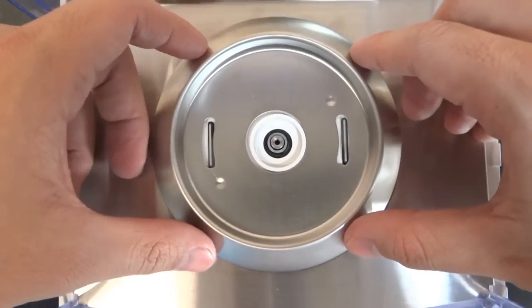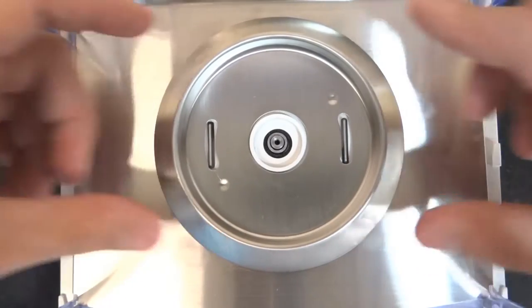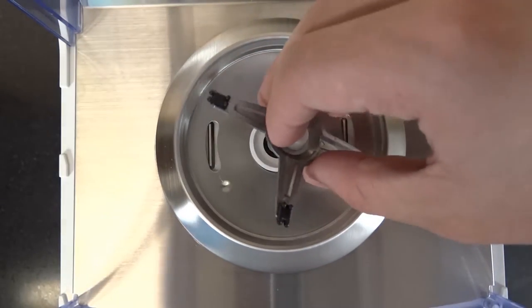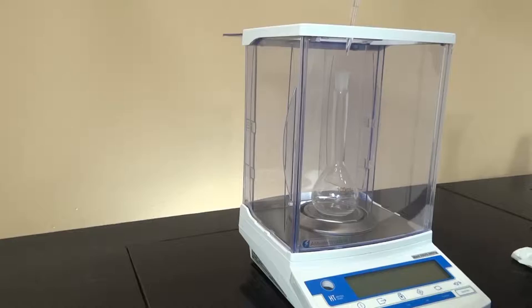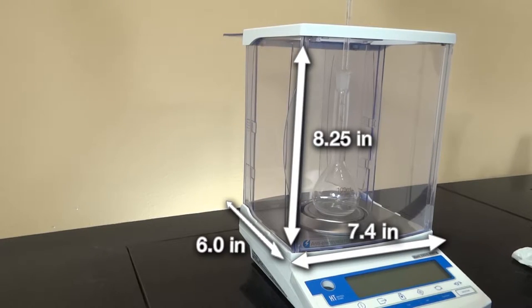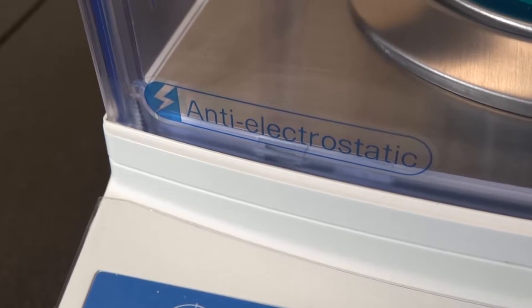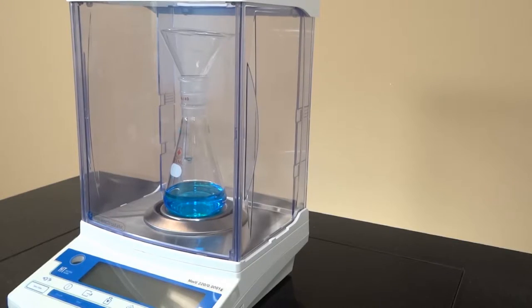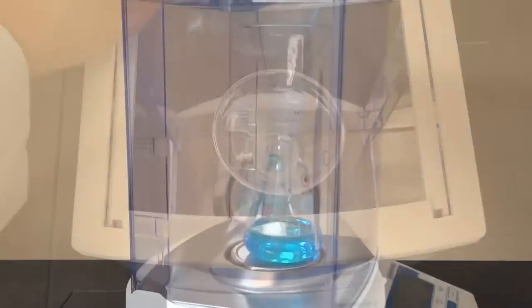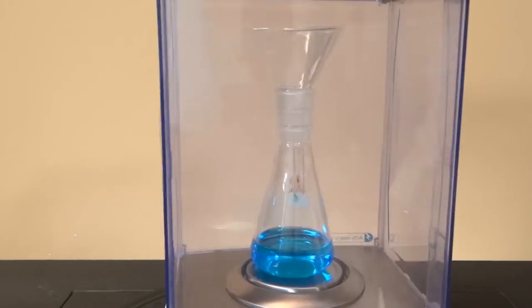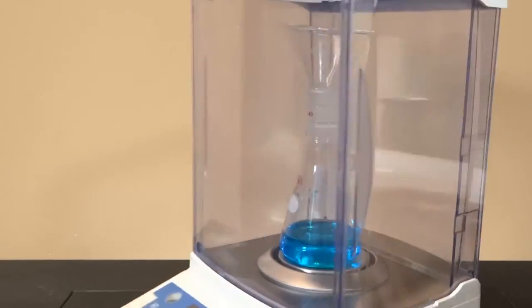The HT has an anti-buoyancy plate to prevent air currents from interfering with the weighing results and a 3.1-inch diameter platter. The HT has a spacious weighing chamber with three anti-static draft shield doors and offers plenty of room for large samples or pipettes. The weighing chamber also allows viewing from all four sides and from the top.